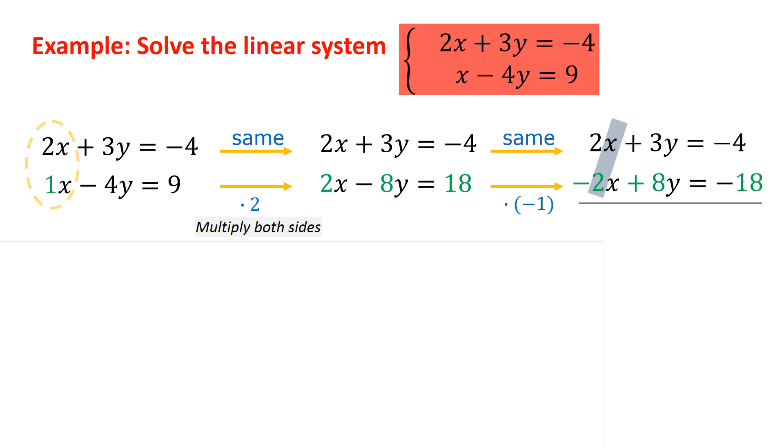And we go ahead and solve the system. 3y plus 8y is 11y. And negative 4 plus negative 18 is negative 22. Divide both sides by 11. And we get y equals negative 2.